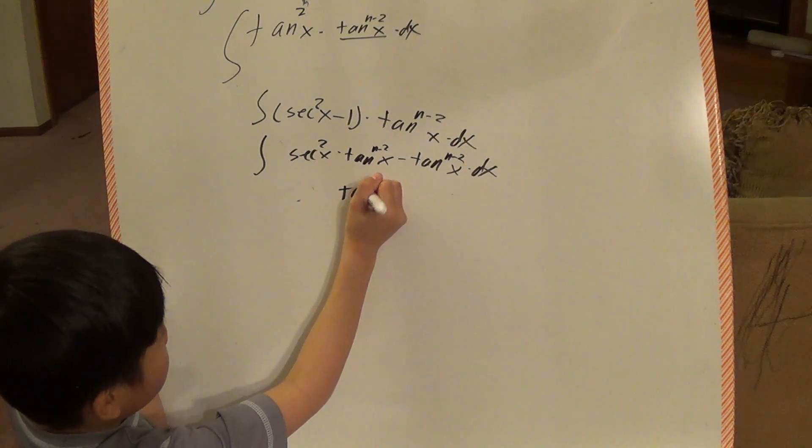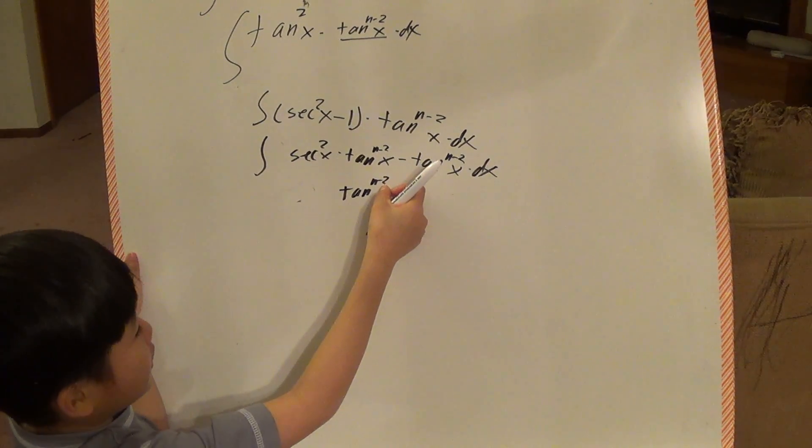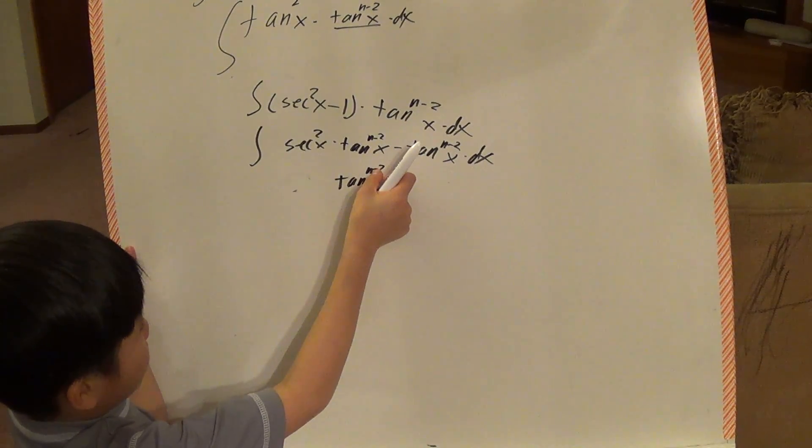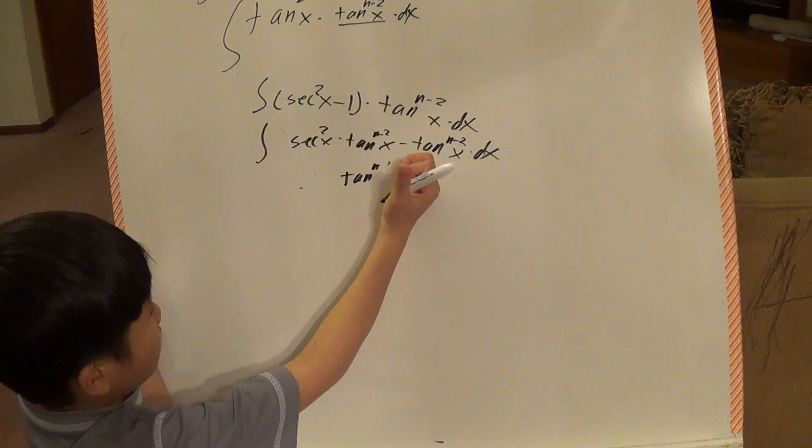So, tan to the n minus 2, I have a trick called go up upside down. So it goes up one number, so minus 1.